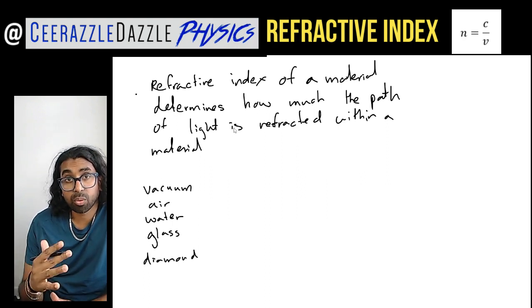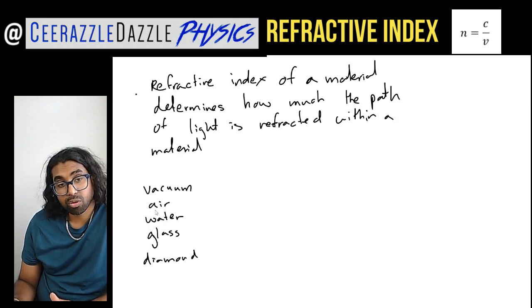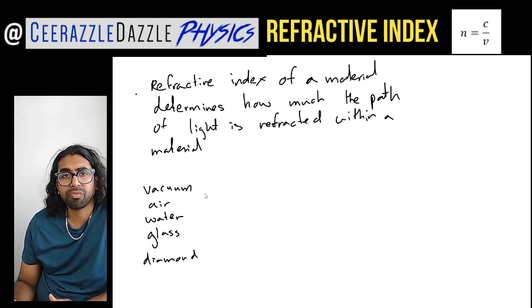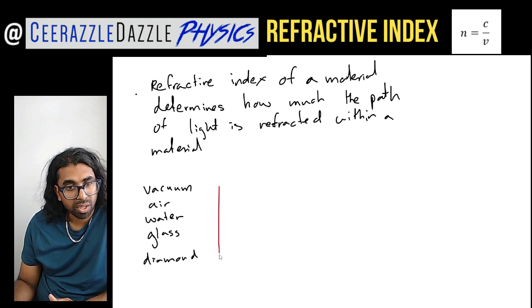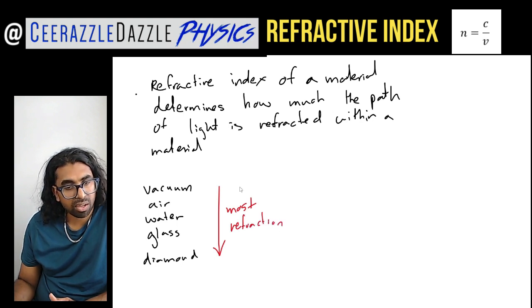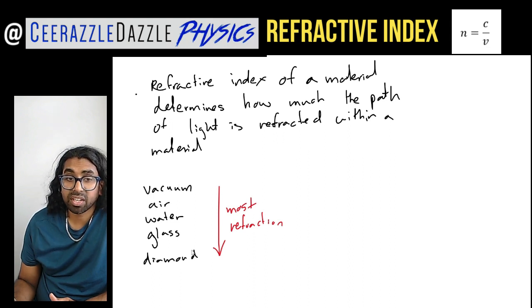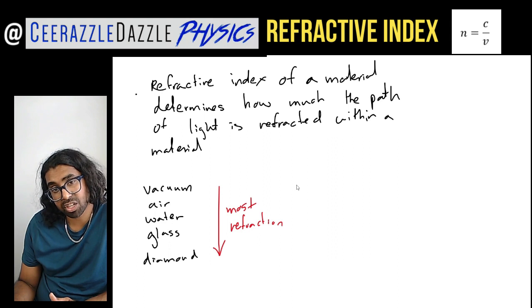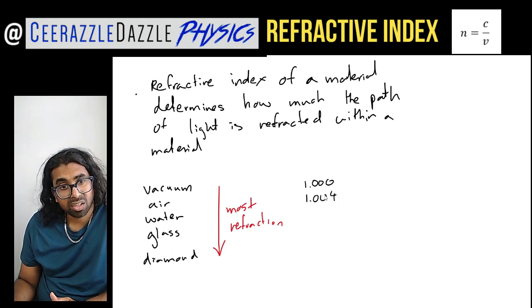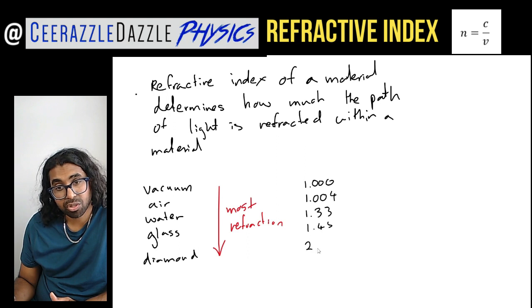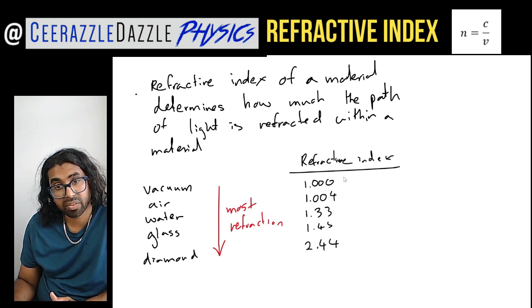Here are some materials: vacuum, air, water, glass, and diamond. As you go down this list there is the most amount of refraction. Their refractive indices are: vacuum = 1.000, air = 1.004, water ≈ 1.33, glass ≈ 1.45, and diamond = 2.44. These are the refractive indices of these materials — notice there are no units.